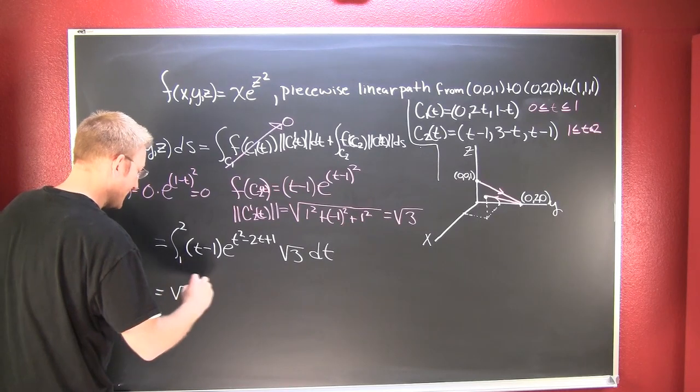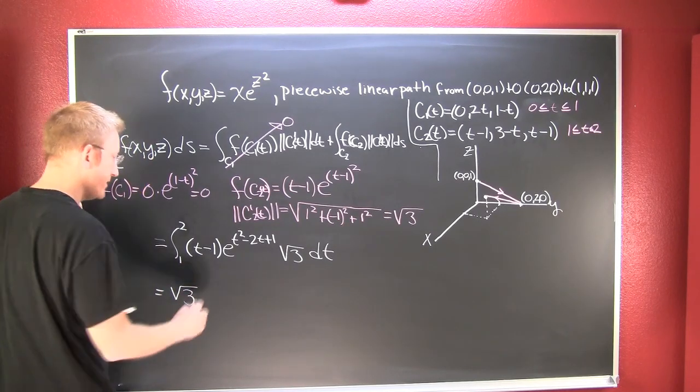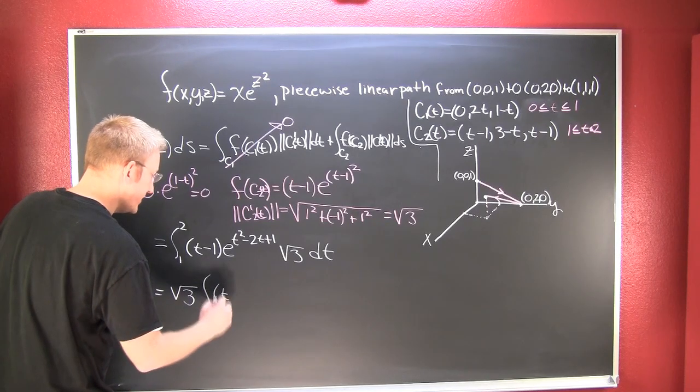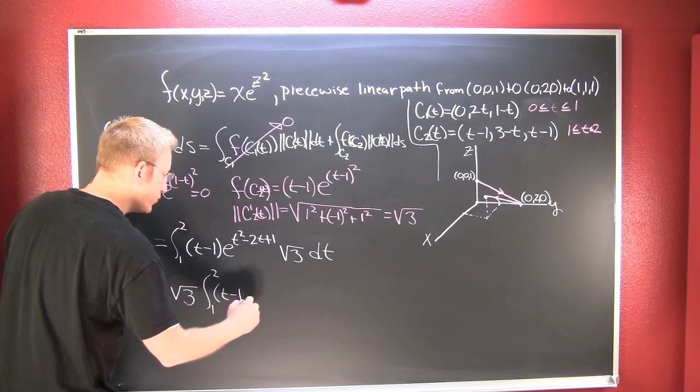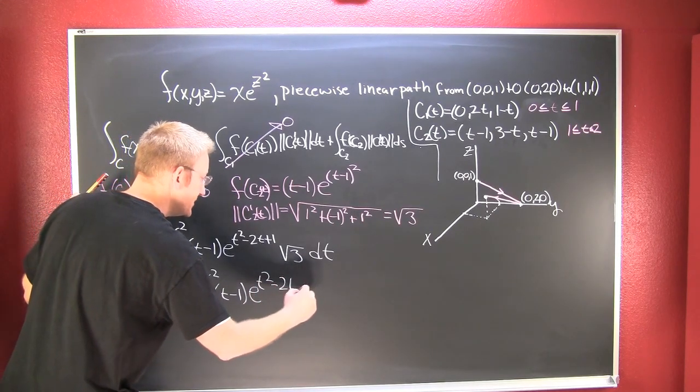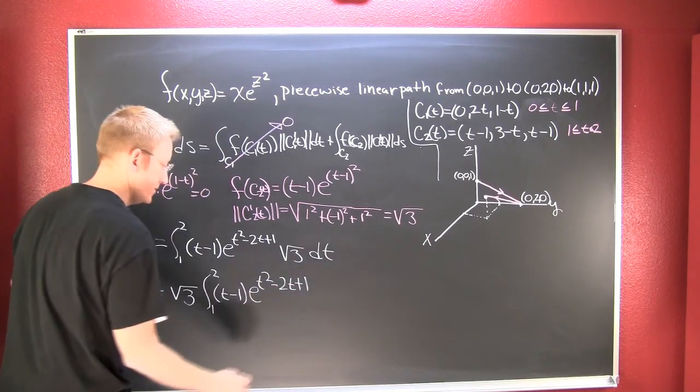There's your square root of 3. This is the integral from 1 to 2 of (t-1) e^(t²-2t+1) dt. All right, that's awesome.